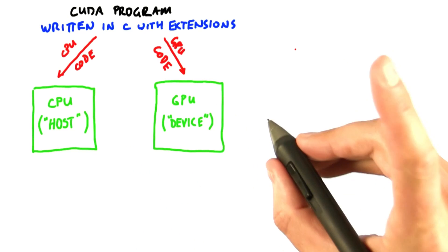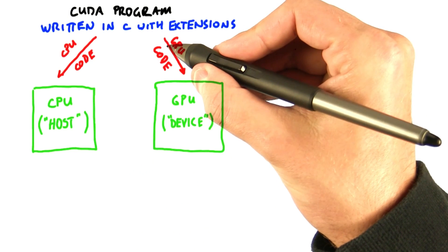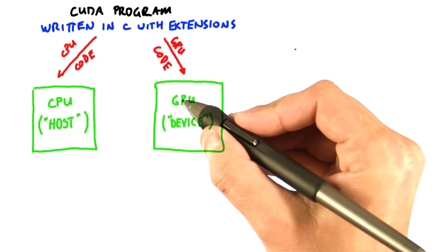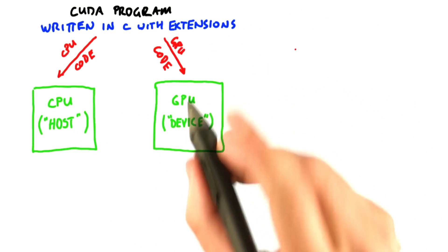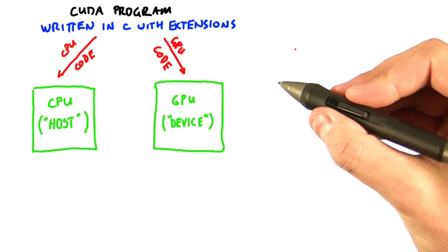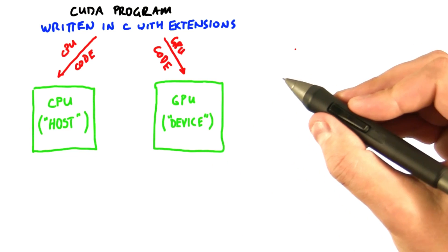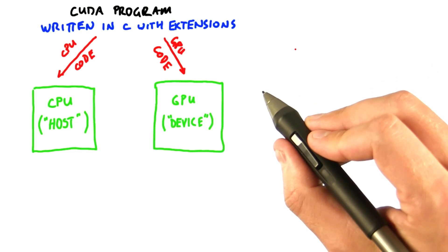That's where CUDA comes in. The CUDA programming model allows us to program both processors with one program so that we can use the power of the GPU. CUDA supports numerous languages, but in this class we're using C.